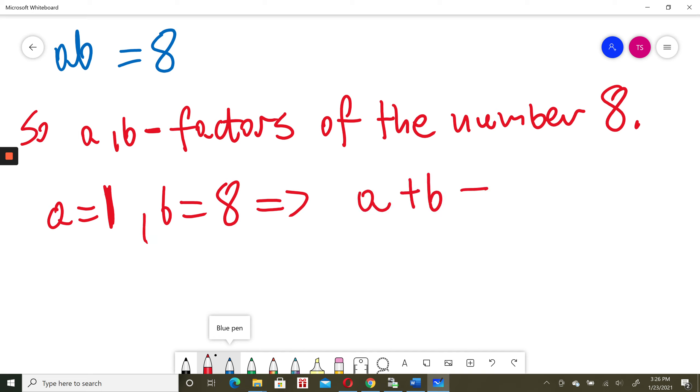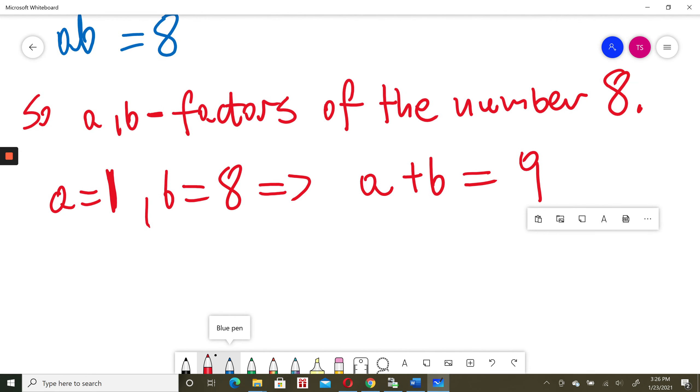Another possibility will be, a could be 2, a times b must be 8. So when a is 2, b must be 4. 2 times 4 will be 8. Then a plus b, 2 plus 4, will be 6 in this case.